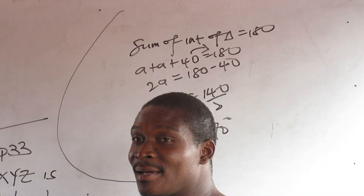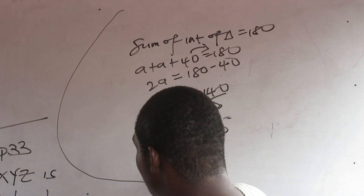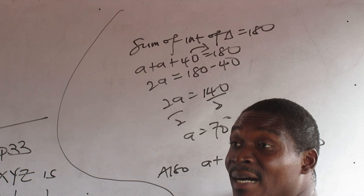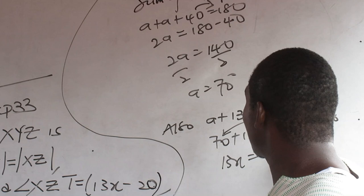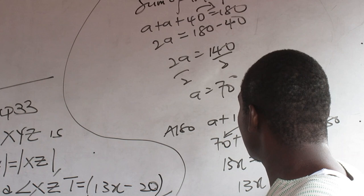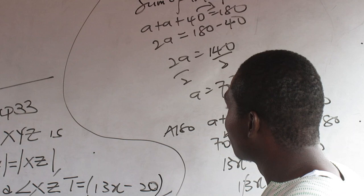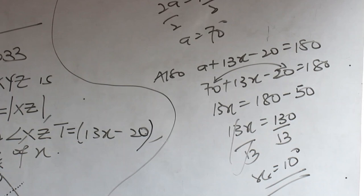I'm looking for X. Is that a straight line approach? Okay. 70. Also, A plus 13X minus 20 equals what? 180. Is that not straight line angles? Okay. 70 plus 13X minus 20 equals what? 180. Now, this will give you 50. 180 minus what? 50. 13X equals what? 130. X equals 10. So that is the problem text.